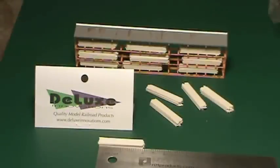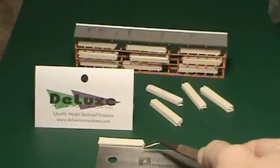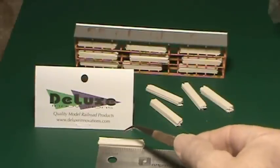Hey this is Steve, here's another product from Deluxe Innovation by Dave Ferrari. He has these stacks of lumber that are right at 20 foot on an N scale ruler here. Now you can cut these down and you can make 8 footers, 10 footers, 12, 16, 18, 20 footers.